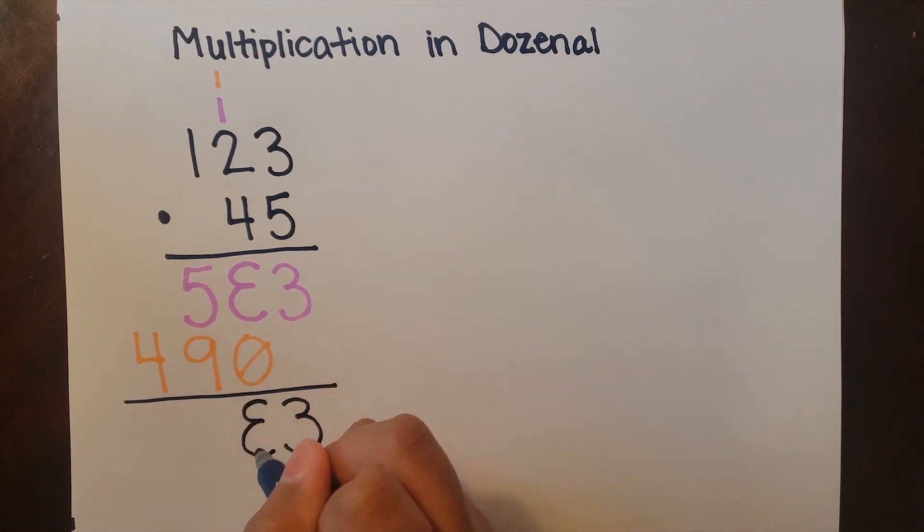L plus 0 is L. 5 plus 9 is 1 dozen and 2. We carry the 1 and add it to the 4, and 4 plus 1 is 5. So the final answer is 5 mow 2 grow L doe 3.